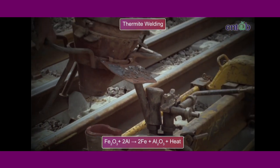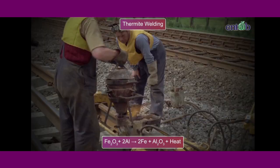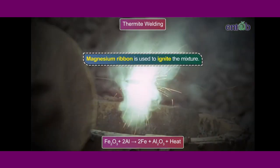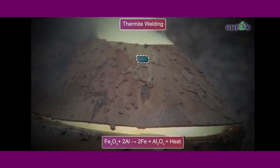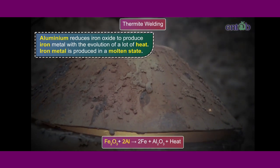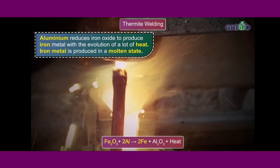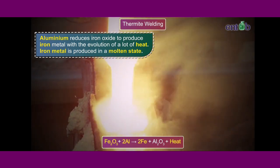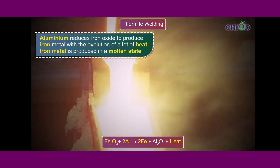Similarly, Fe₃O₄ is reduced to Fe in presence of aluminium. Here, magnesium ribbon is used to ignite the mixture. Aluminium reduces iron oxide to produce iron metal with the evolution of a lot of heat. Due to this, iron metal is produced in a molten state.